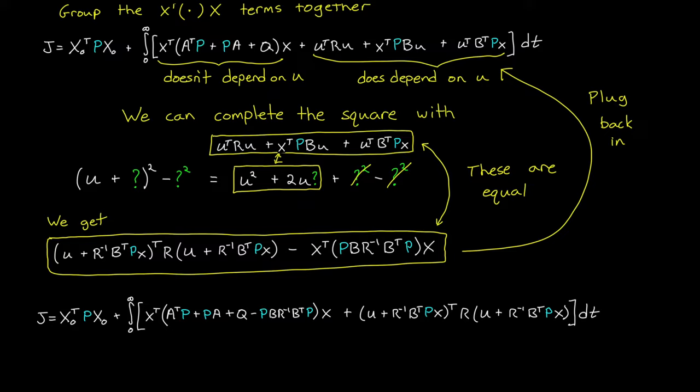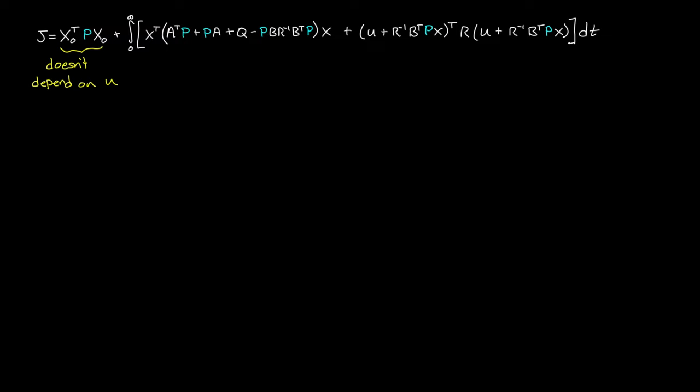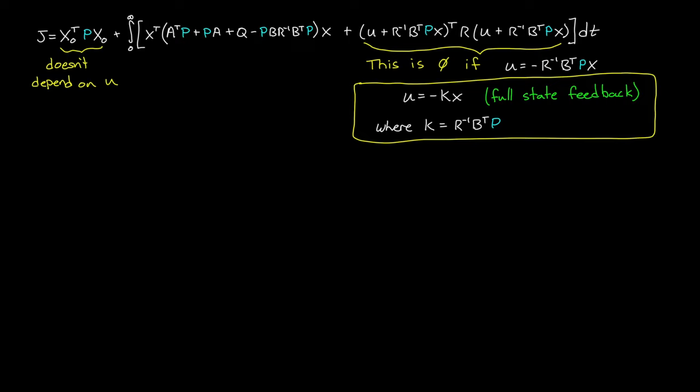This first term doesn't depend on U, so that's cost we can't minimize. But this integral we can minimize. And if we look at this second part, we can actually make this zero by simply choosing U to be negative R inverse B transpose P x. Which is kind of a cool result if you think about it. This is saying that the optimal controller is really just full state feedback, where K is a constant gain equal to R inverse B transpose times this matrix called P.